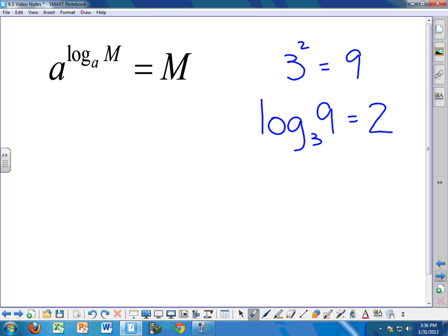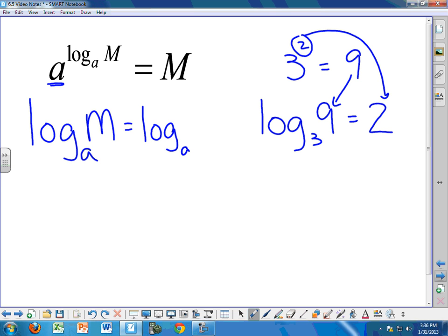If we try to do the same thing on this right-hand equation, we're going to write log, and we're going to put the A in the same place that we put the 3. Of course, we want to put an A there, not a 3. So A. We want to put where we put the 9 over here, we want to put the M, and then on the right-hand side of the equation, we want to put the exponent, which is log base A M.